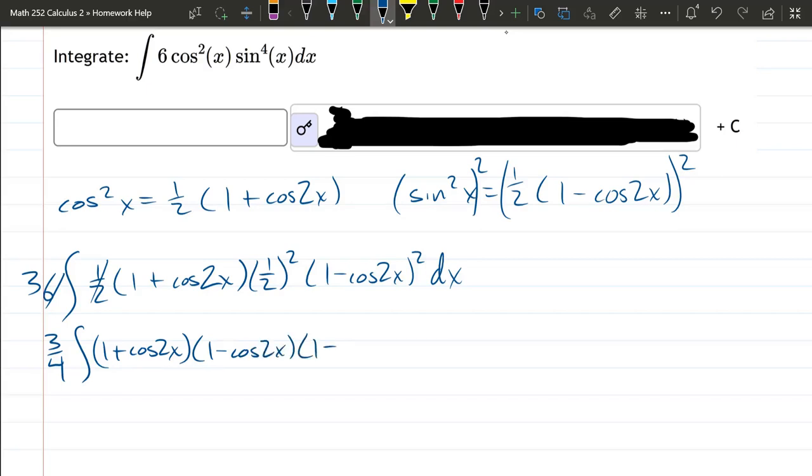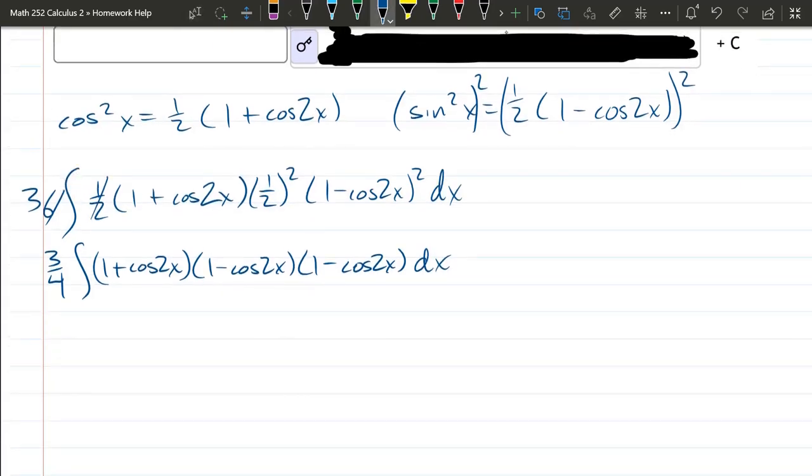I am going to write the one minus cos 2x squared as one minus cos 2x times itself. Why am I doing this? Well, these two factors are easy to multiply. They're conjugate pairs. So when you multiply them, the outside inside terms cancel. So you get one, one times one is one squared, which is one, minus, now we get cos squared of 2x. So again, I took those two and foiled them, but the outside inside terms cancel. That's why I reordered them and multiplied like that.